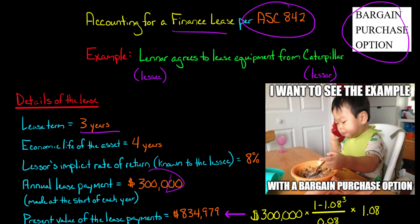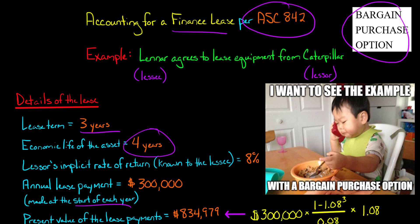We've got an annual lease payment of $300,000. Each payment is made at the start of the year — so basically three years with a $300,000 payment made at the beginning of each year. The economic life of the asset is four years. That's going to become important because since there's a bargain purchase option, the right-of-use asset is going to be amortized over four years instead of the three-year lease term.